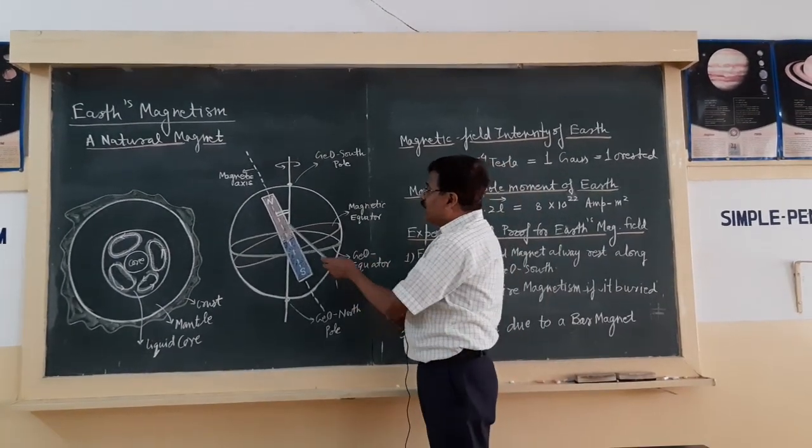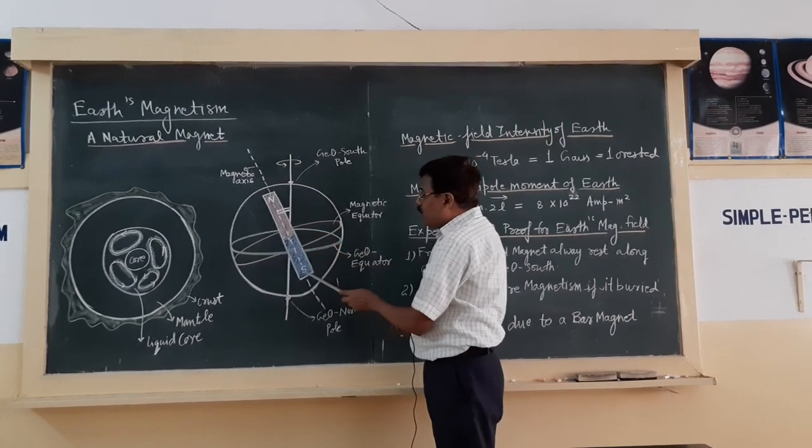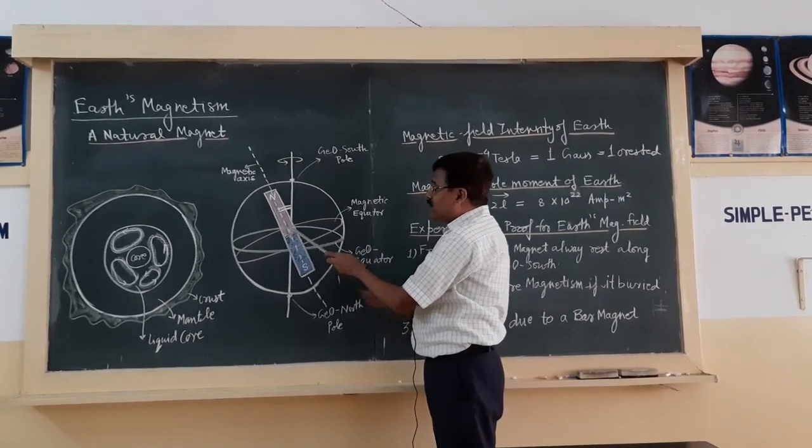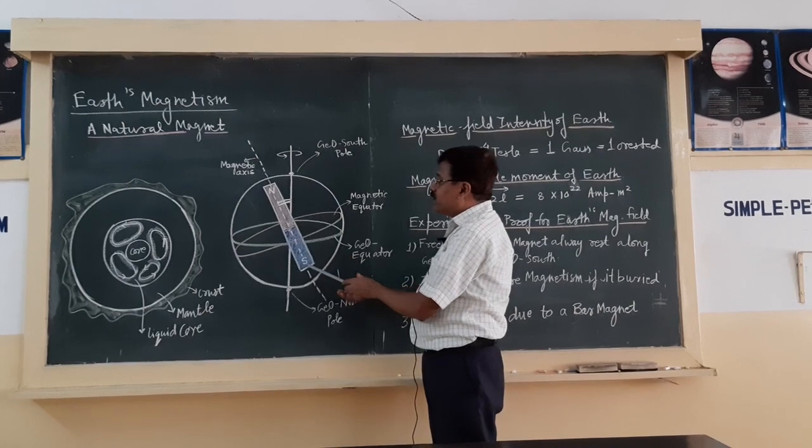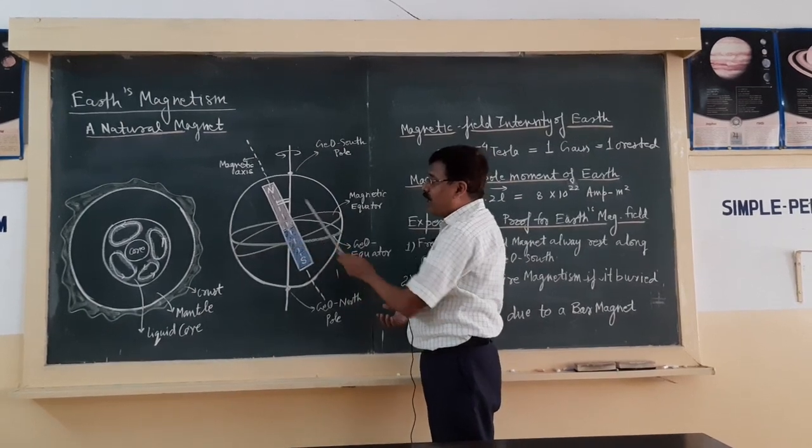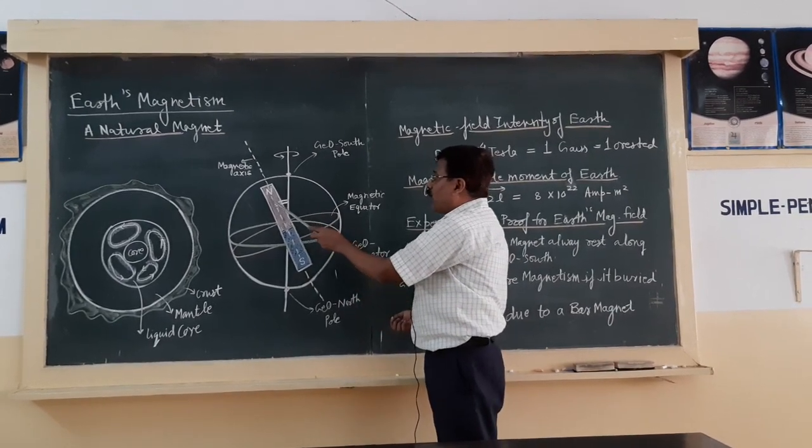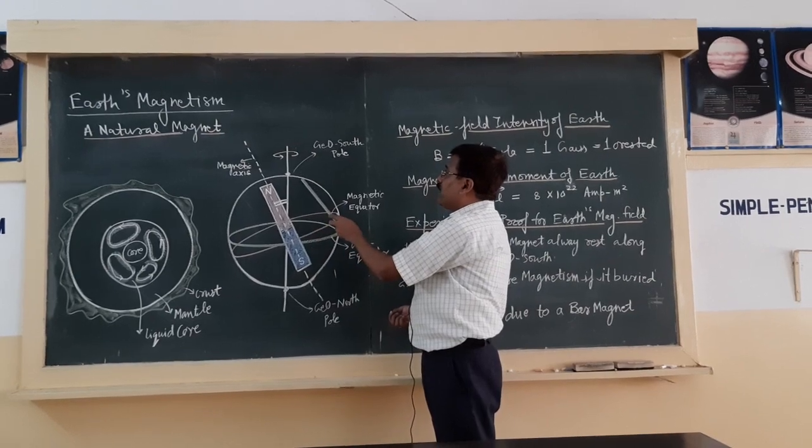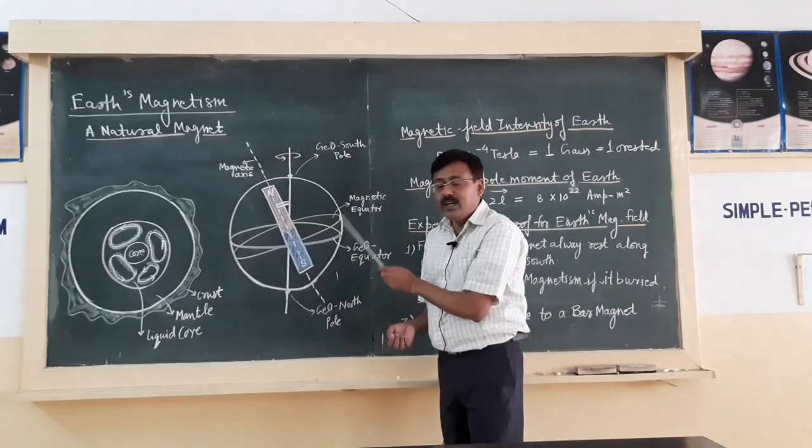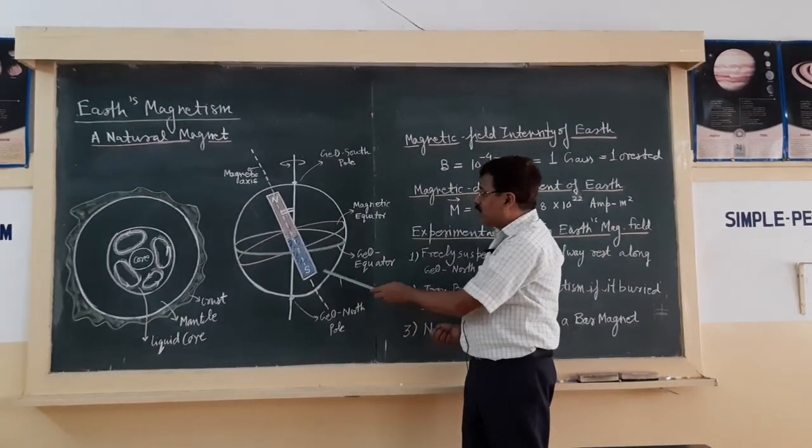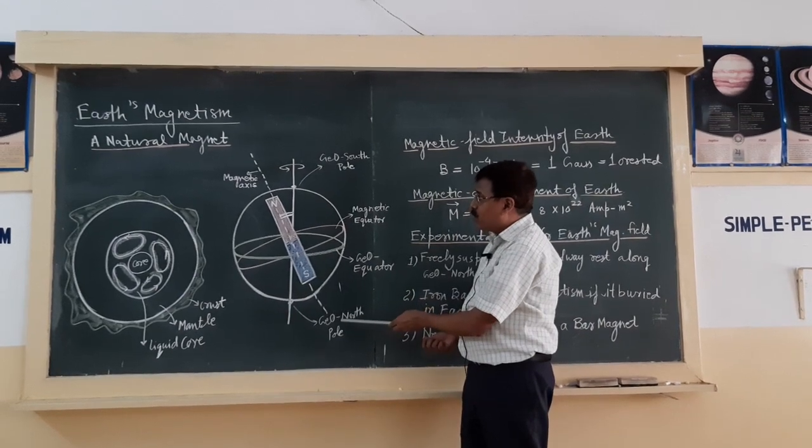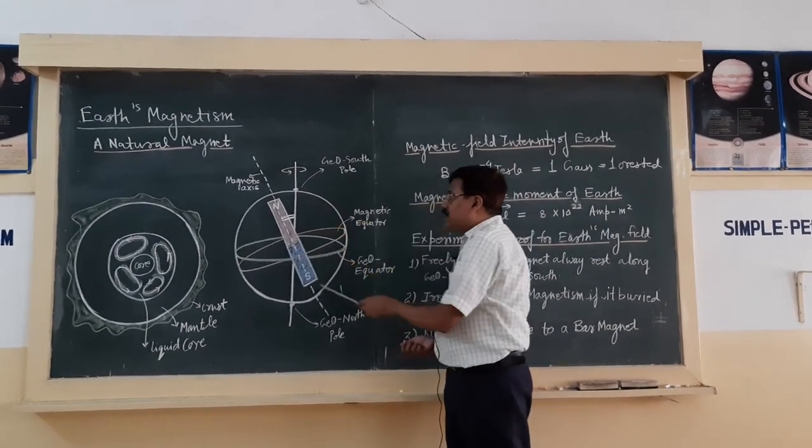Now, the second thing is the earth magnet. This is the assumed bar magnet inside the earth - it is not an actual bar magnet, this is the assumed bar magnet due to the convection current. So the north pole of the earth magnet is lying in the geographical south region, the south pole of the magnet is lying in the geographical north pole, and the axis of the earth magnet is inclined at some angle, the angle is near about 10 to 20 degrees.